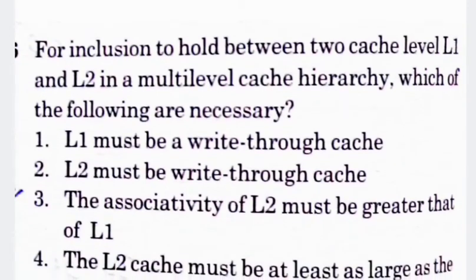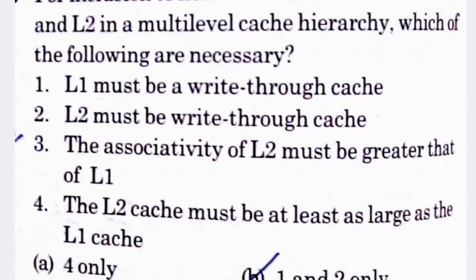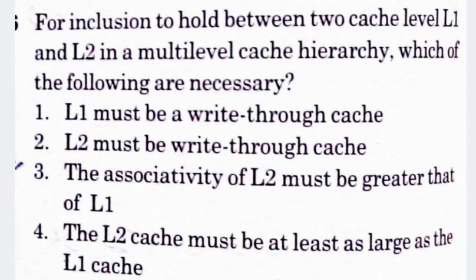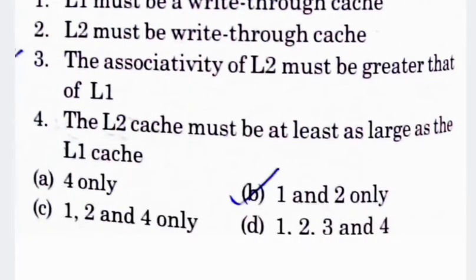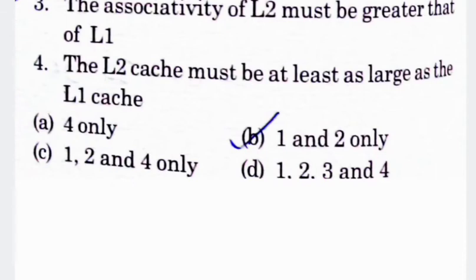Next question: for inclusion to hold between two cache levels L1 and L2 in a multi-level cache hierarchy, which of the following are necessary? Statement 1: L1 must be a write-through cache. Statement 2: L2 must be a write-through cache. Statement 3: associativity of L2 must be greater than L1. Statement 4: L2 cache must be at least as large as L1. Statements 1 and 2 are the necessary conditions, so option B — first and second only — is your correct answer.